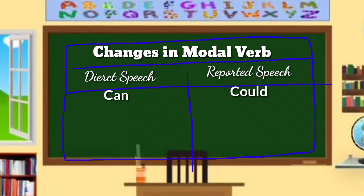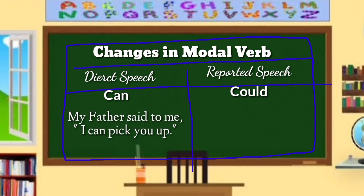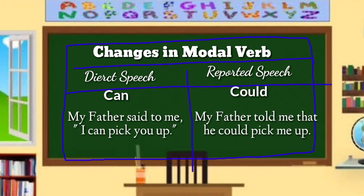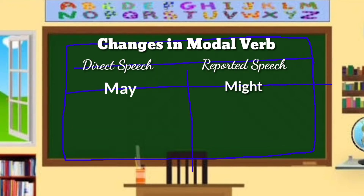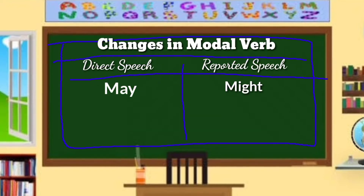Direct speech uses 'can,' while reported speech uses 'could.' For example — DS: My father said to me, 'I can pick you up.' RS: My father told me that he could pick me up. 'Can' is changed to 'could.'